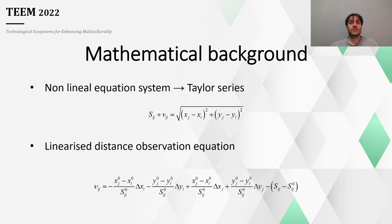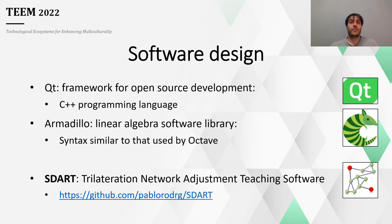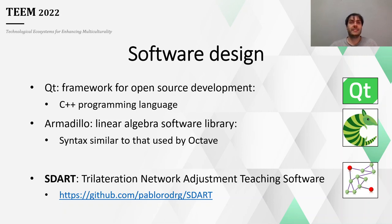To highlight the needs of the software development, I would like to remark that the programming of least-squares adjustment involves large matrices, which can be complicated and tedious for the student to track down their mistakes. Therefore, to support the step-by-step resolution of a survey network and its programming by the student, the SDAR software was developed. It was programmed in Qt, using the linear algebra library Armadillo, which has a syntax similar to that used by Octave, the matrix calculation software employed in the subject.